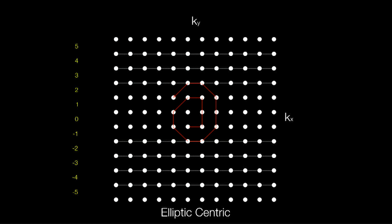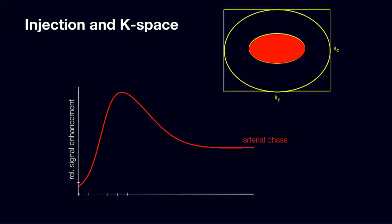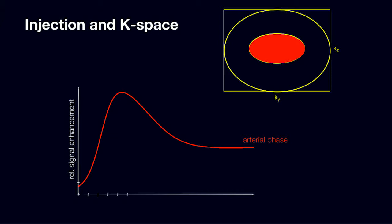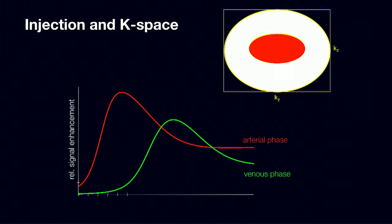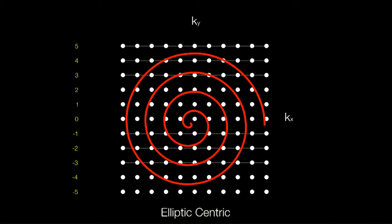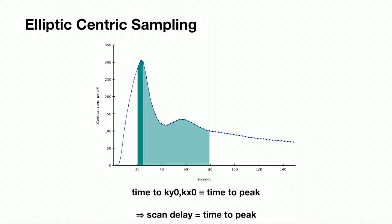With spiral or elliptical centric encoding, we start at the centre of K-space and work out, which further concentrates the contrast-defining lines earlier in the sequence. We can visualize it as collecting our centre of K-space during the peak arterial phase and then doing the edges of K-space during the venous phase, so we won't see the venous peak. This means we can lengthen our sequence, collect more edge data, and make a better angiogram because we're suppressing that venous peak.